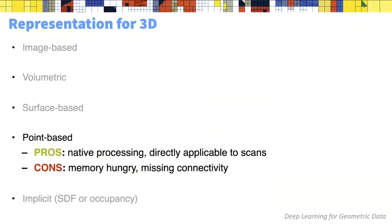To recap: the point-based method directly works on points without quantizing space, but is memory hungry and lacks array construction. We have a CVPR paper this year called Lean PointNet that provides a much more memory-efficient version; if you are going to apply PointNet you may want to try our code for that, as it allows handling bigger point sets.